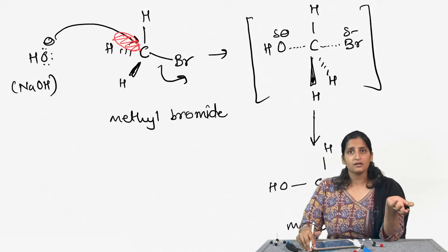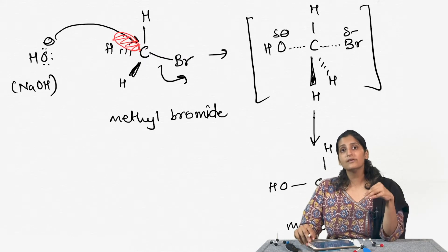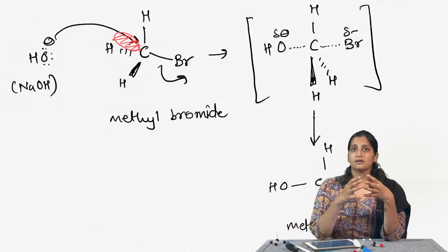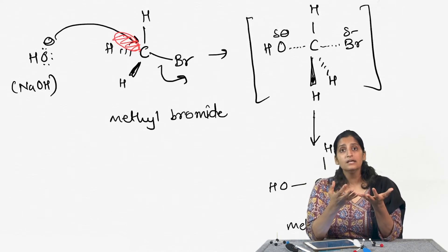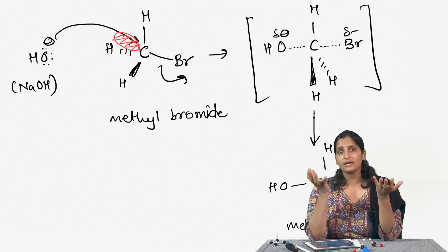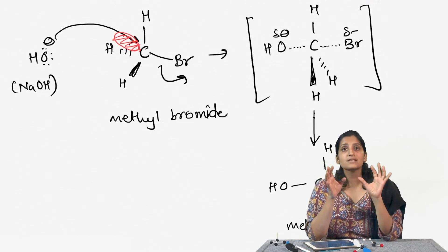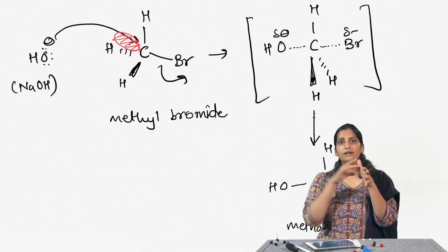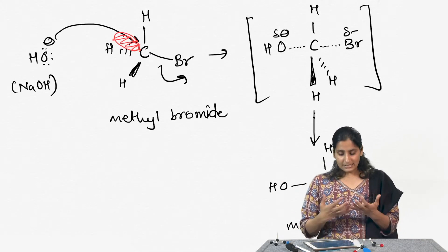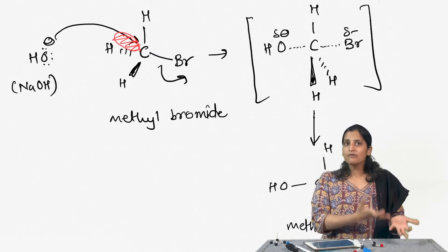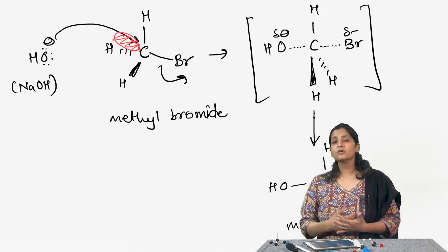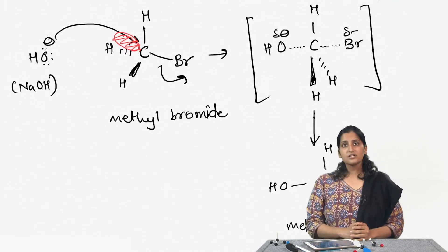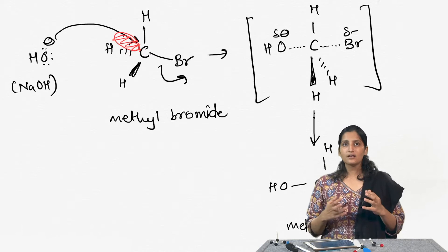Why is backside attack important? Because this backside attack governs the way the product is going to look. The backside attack by the nucleophile is facilitated in two ways. First, the polarization of the carbon-bromine bond gives the carbon atom a delta positive and the bromine a delta negative. So the nucleophile, which is looking for a positive charge, is going to attack that partially positive carbon.